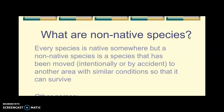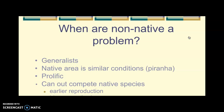Some general characteristics of an invasive species — what makes a species become a problem — is that they are generalists, meaning they can live in a wide range of conditions. The conditions also have to be similar, as with the piranha example. They are also prolific, meaning they reproduce early and often, producing lots of offspring — typically what's called an r-strategist, which we'll talk about more later.